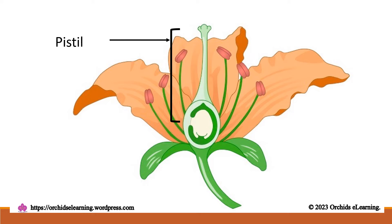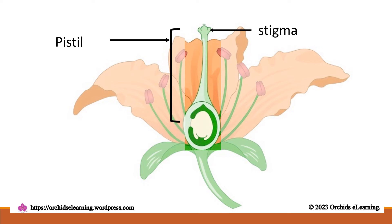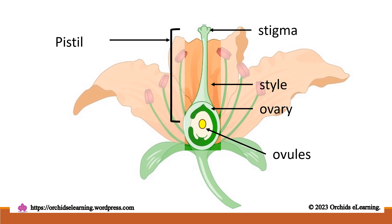The carpel or pistil is the female reproductive part of the flower. It has three parts: a top portion called the stigma, an enlarged base called the ovary, and a tube-like structure called the style that connects the ovary to the stigma. The ovary contains tiny ball-like structures called ovules, which later become seeds.